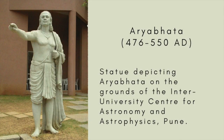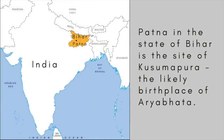Aryabhata was the first of the great astronomer-mathematicians from the classical age of Indian mathematics, which ran from about the 5th century AD to the 11th century. He was born in 476 AD, probably in Kusumapura, or present-day Patna in eastern India, and died in 550. He is sometimes referred to as Aryabhata the Elder, or Aryabhata I, because there was another Indian mathematician of the same name who lived later in the 10th century.